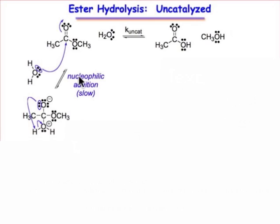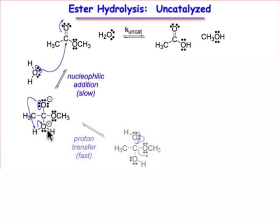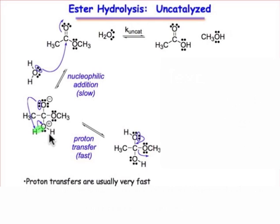The mechanism involves nucleophilic addition to a polarized π bond — the carbonyl group. That ends up making a zwitterionic intermediate, meaning it has both positive and negative charges. The next step involves a proton transfer to move the positive charge from the protonated water molecule to the negatively charged oxygen, so we end up with this neutral species.